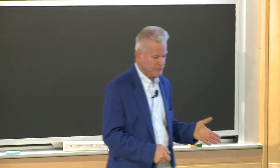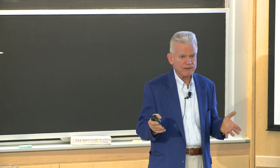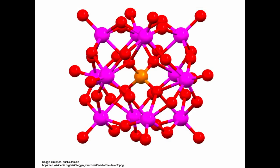This is what you're actually making. It's beautiful — this is the Keggin structure. It captures the phosphorus in the center, surrounded by 12 molybdenums and 40 oxygens. I want you to take a moment, close your eyes, and think about this image. Carry this image with you into the lab when you do this experiment. You're actually going to be making this in your beakers when you add the color developer to your water samples — creating this in about 15 minutes. This is inorganic chemistry at its best.